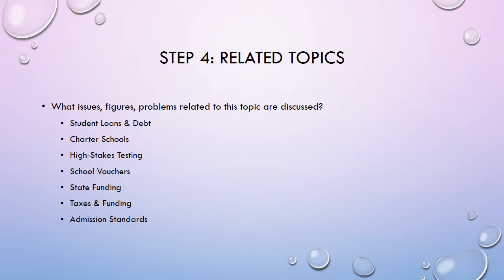Step four is to think about related topics. What other issues, people, figures, or problems are related to the topic of education? This is similar to step one, except here we're expanding our reach — not just phrases that have the word education in them, but things that are related to it. What are some things related to education? You might have heard about student loan debt, charter schools, high-stakes testing, school voucher programs, debates over state funding of higher education or K-12 education, questions about taxes and funding, and admission standards. List as many as you can that are related to your topic.